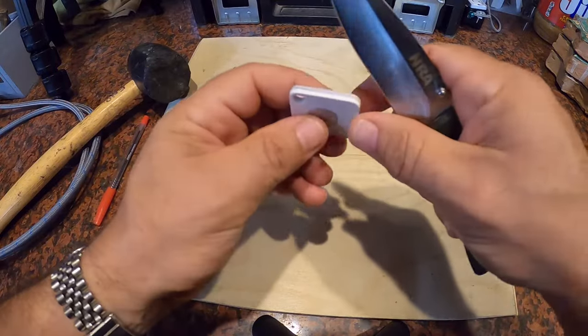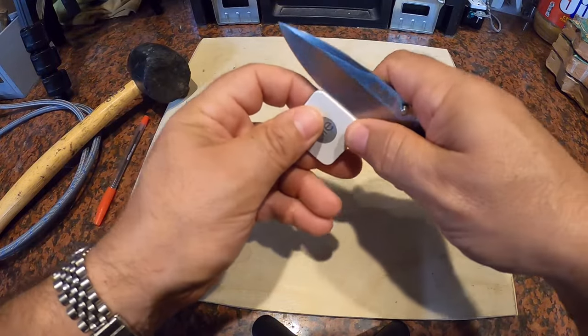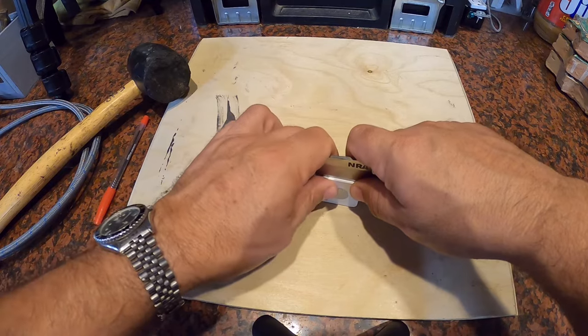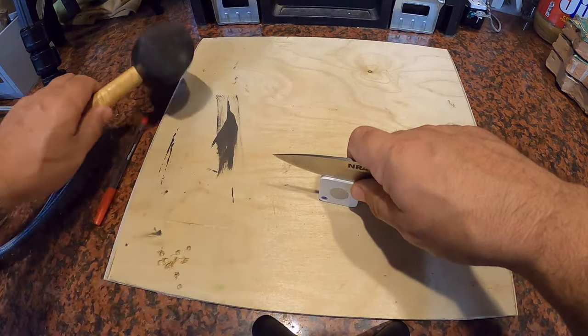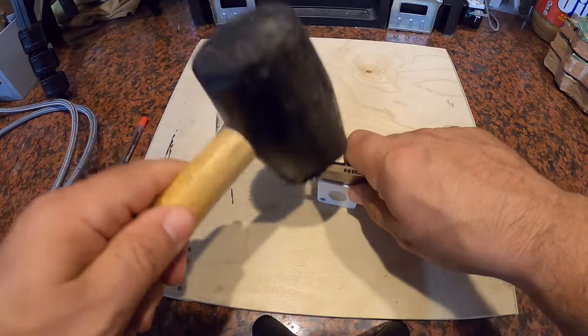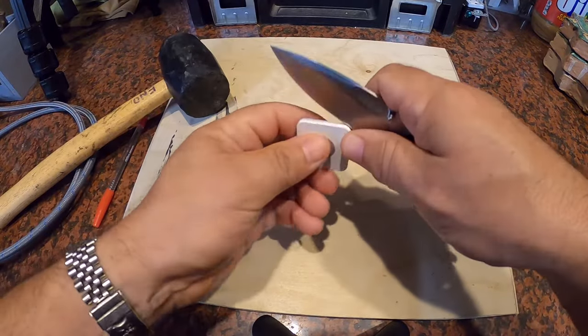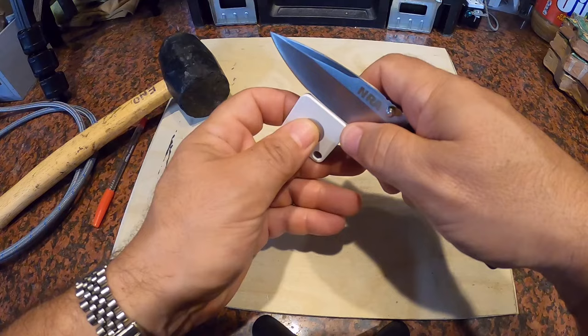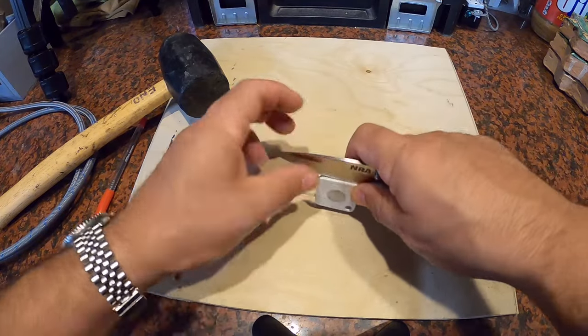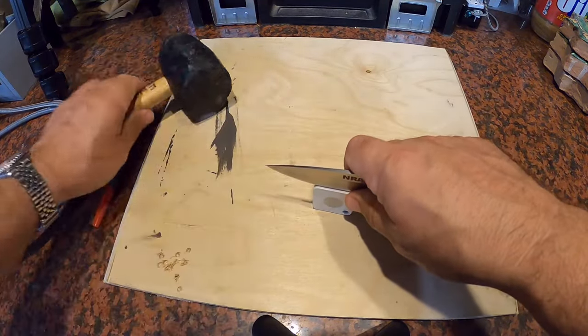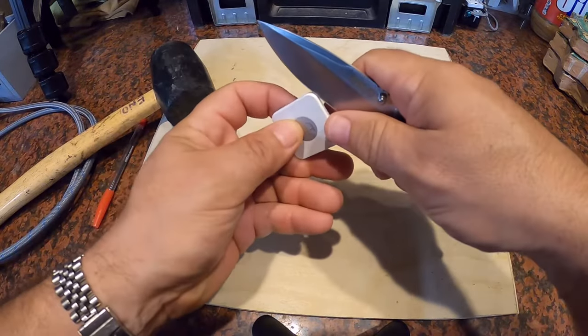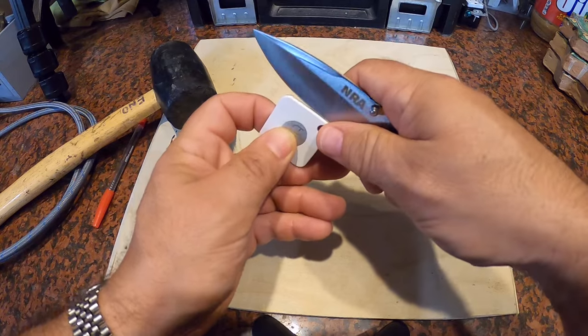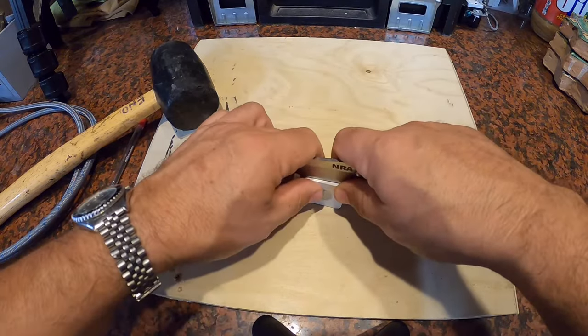Hear that high-pitched noise it made? That was the glue letting go of the plastic I should say. And here I'll do it again. There it goes. So you hear me tapping it and you hear a high-pitched sound, that's the glue letting go. So I'm just going to rotate it around all four corners. Tap it again. There it goes.